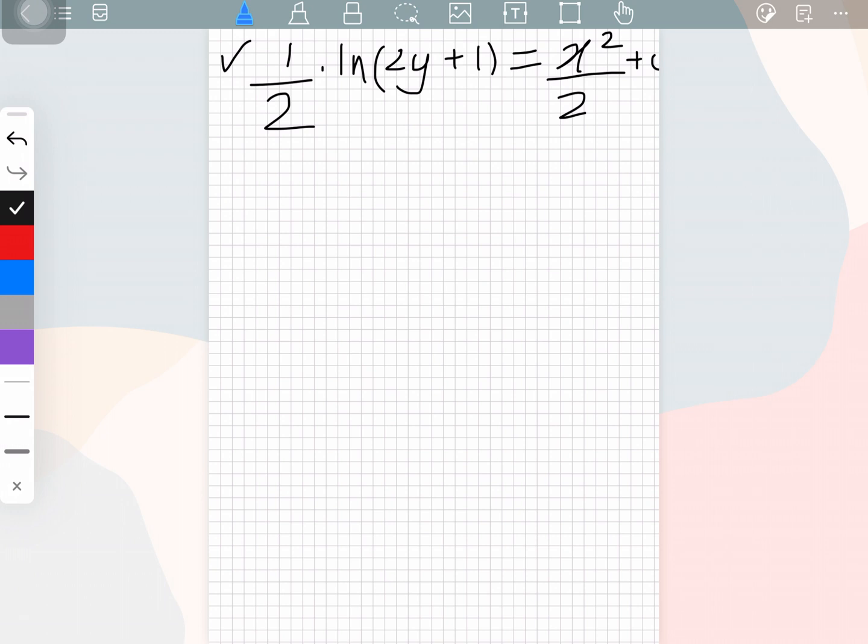So now let's send this 2 to the other side. So it will be ln 2y plus 1 is equal to 2x square over 2 plus 2c.